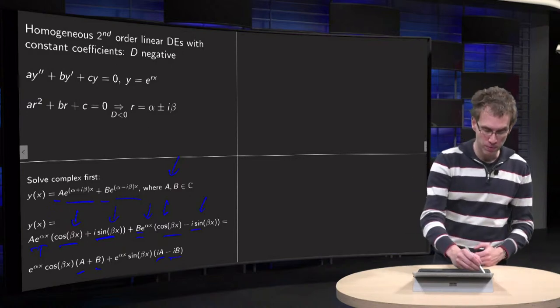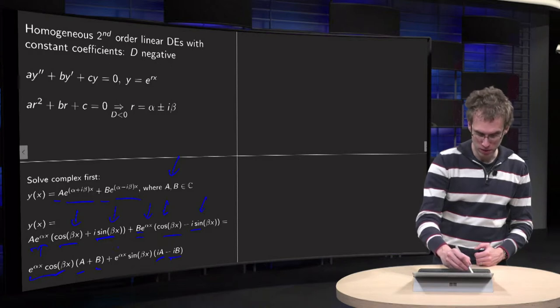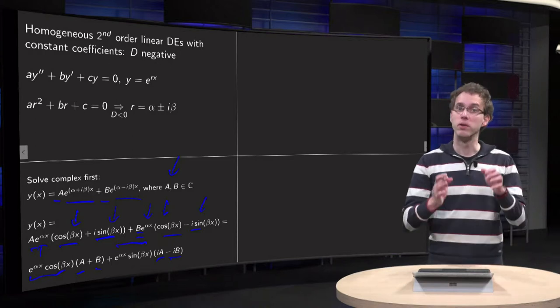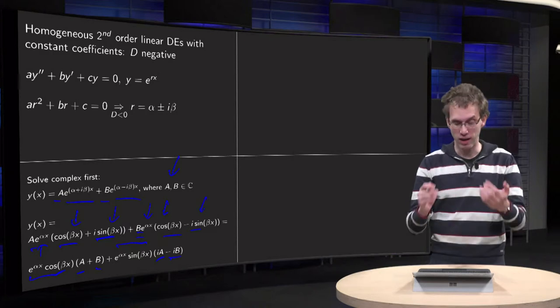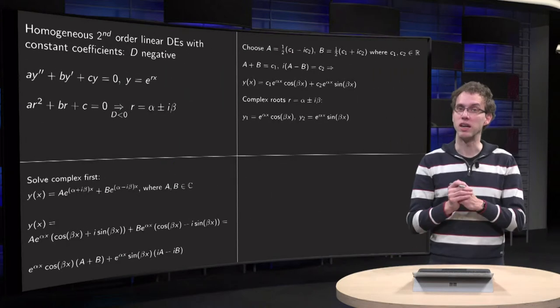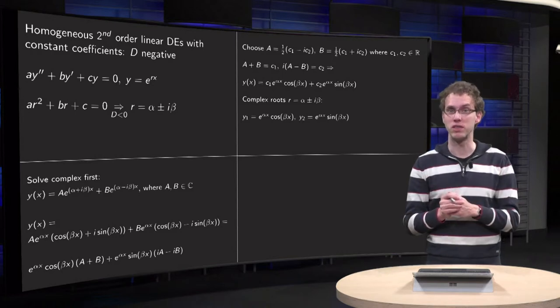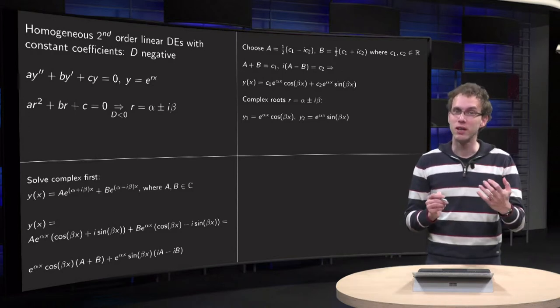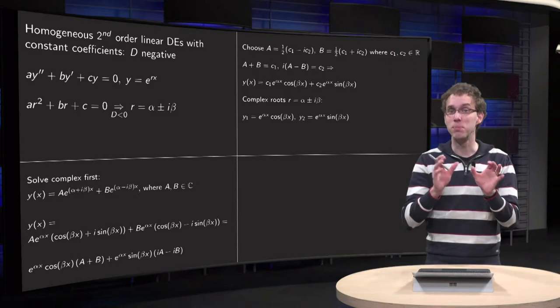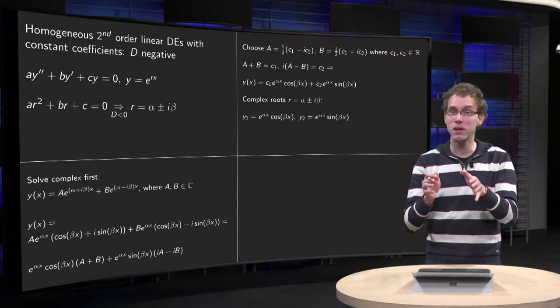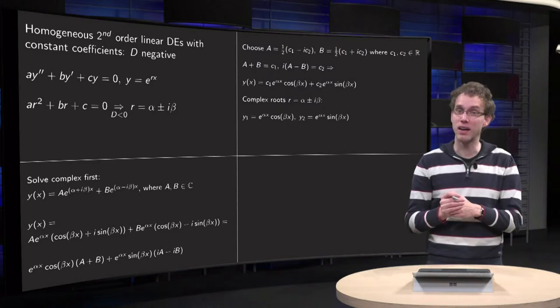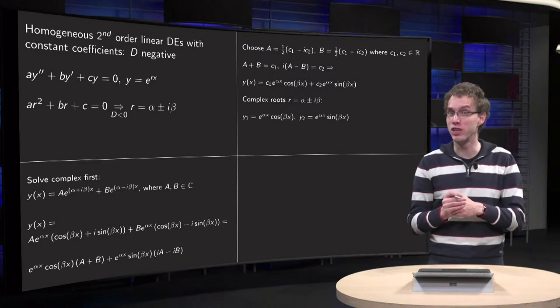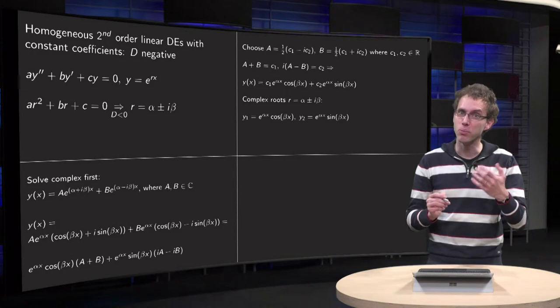And now the nice part is that this part is already real. This part is already real as well. But the A + B is some complex number, some unknown constant. And the iA - iB is also some unknown complex constant. And now you do a trick. You choose your constants A and B such that the combinations A + B and i(A - B) becomes real.